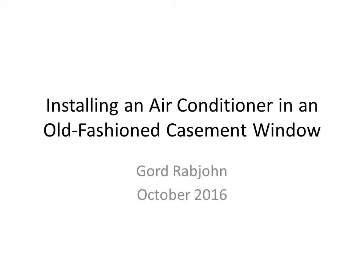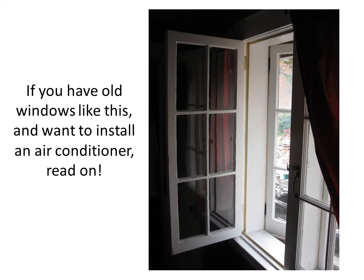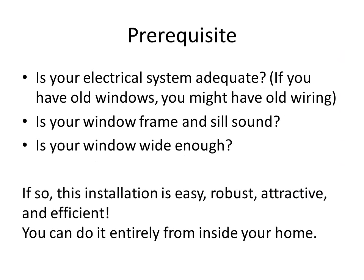This presentation describes a technique to install a typical standard window air conditioner in an old-fashioned casement window — a window that looks something like this. If you have old hinged casement windows, this describes how to install an air conditioner. Prerequisites: make sure your electrical system is adequate. If you have old windows like this, you also probably have old wiring. Is your window frame and windowsill sound? And finally, is your window wide enough?